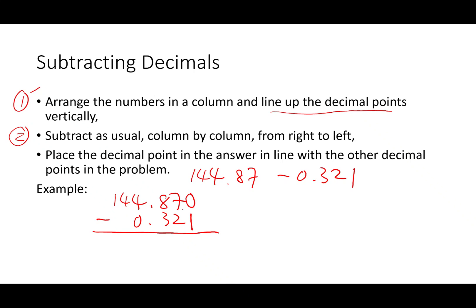Then we will proceed to do the subtraction as usual. Now 0 cannot minus 1, so we need to borrow 1. Once we do that, this one becomes 6 and here we will have 10. So 10 minus 1 we get 9. After that, 6 minus 2 is 4, 8 minus 3 is 5, and then this is our decimal point.